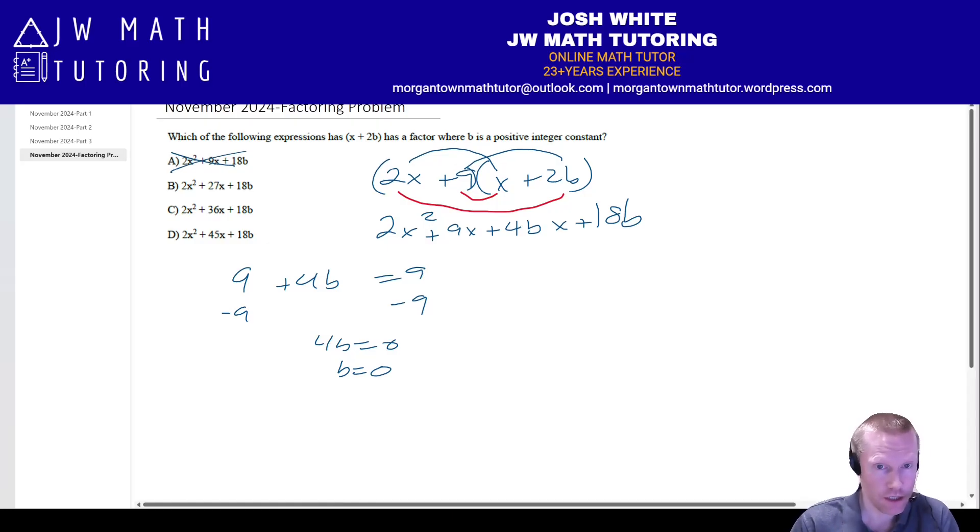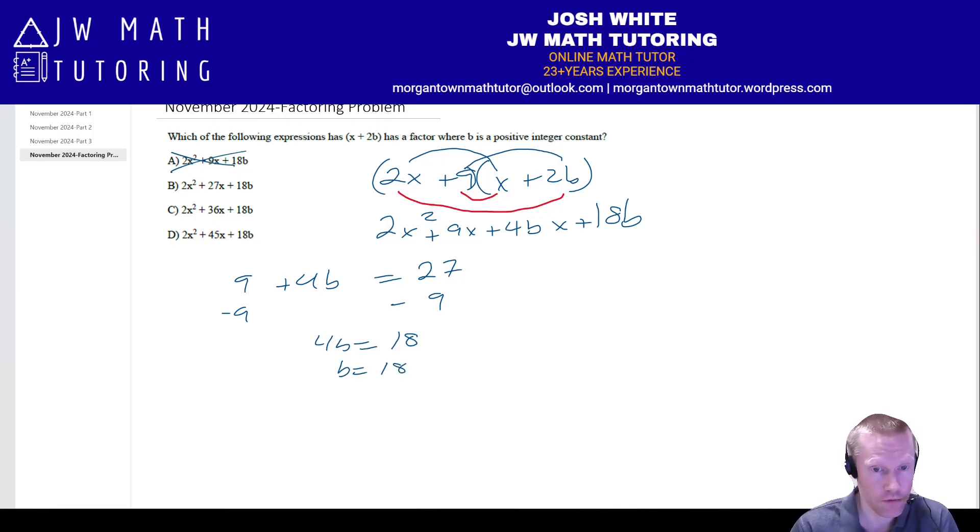Now, let's say you check the second one. So we have it now equal to 27. So now if you do that, notice you get 4b equal to 18. If you divide by 4, you're just going to get 18 over 4 or 9 halves. That's not an integer, it's 4.5, so that does not work as a solution.